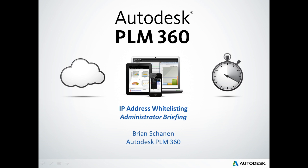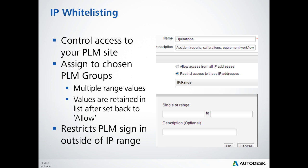With Autodesk PLM 360, administrators can now use IP whitelisting, a method of configuring preferred network IP addresses, as a way to control group-level access to their PLM 360 site. When a whitelist of IP addresses is associated with a particular user group, only members of the group signing in from one of the addresses on the list are given access to the site.